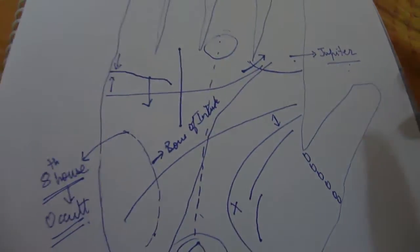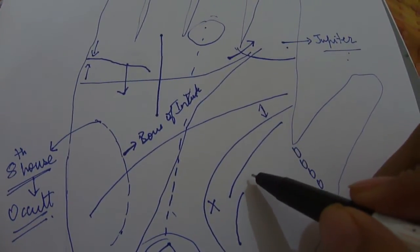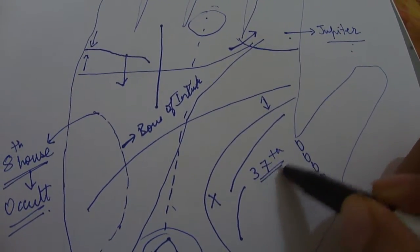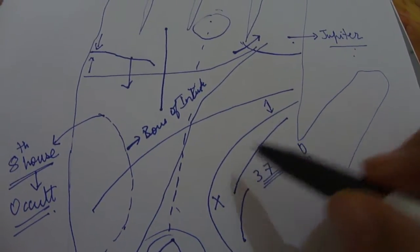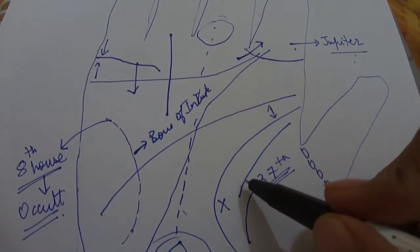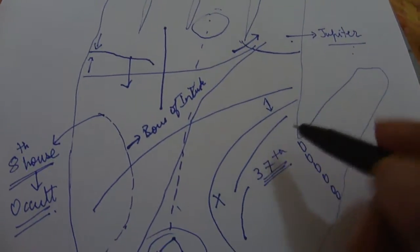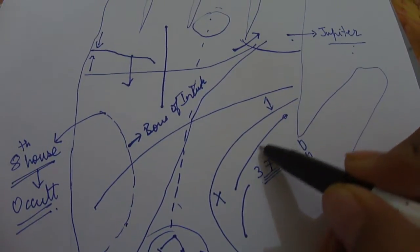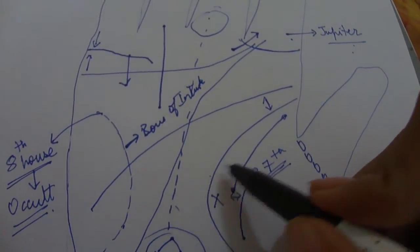An interesting event also occurred at the person's 37th year. At the 37th year the person had a break in a major relationship, this relationship. Though the relationship continued but it was never normal. This we can see again, the relationship starting over here.